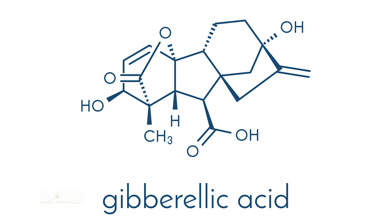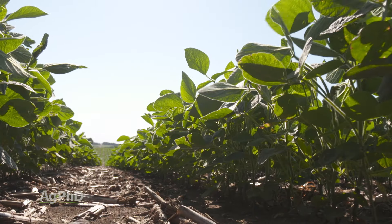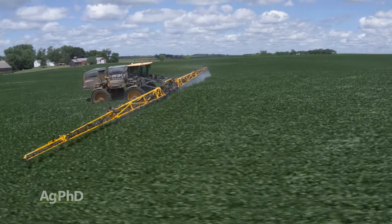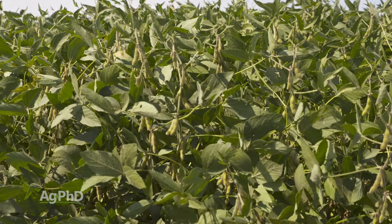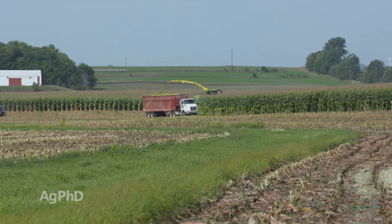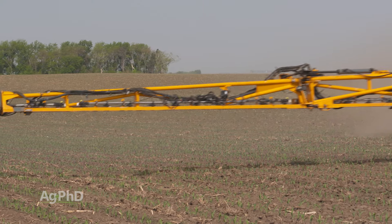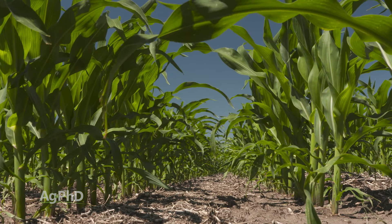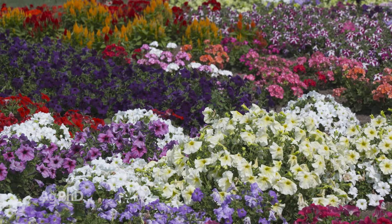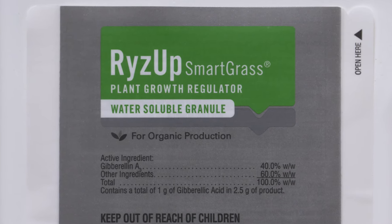With gibberellic acid, we take something produced in a factory — the same thing you'd find naturally in the plant — and spray it on that plant to, in effect, trick the plant into thinking things are better and that it needs to grow taller. We can spray this on pastures, and also on silage corn, because in the past the only way to make silage corn taller was to plant later. Now you can plant relatively early, spray gibberellic acid on, trick the plant, and make it grow tall. Plant hormones are used in a lot of production — certainly with flowers. Today we're focusing on gibberellic acid, which helps the plant regulate height at certain stages.